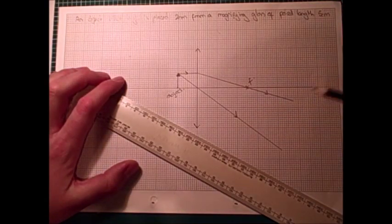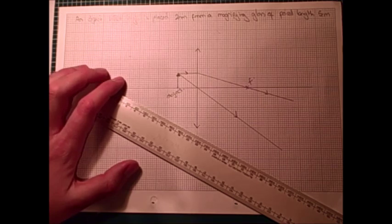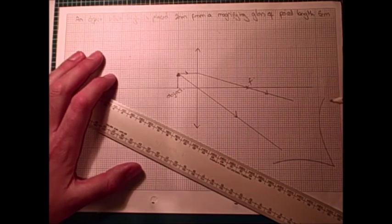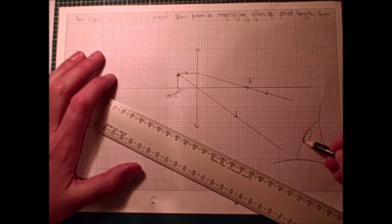So, this is all looking very nice. But where does our image form? Because these real rays don't cross. So, these real rays, when it's acting as a magnifying glass, will be going into our eye. So, we could add our eye here.